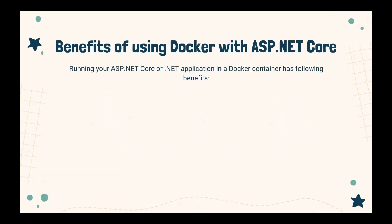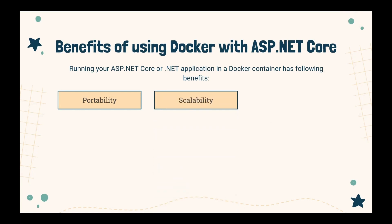Moving towards the benefits of Docker with ASP.NET Core applications. First is portability — Docker allows you to package your ASP.NET Core application and its dependencies into a self-contained isolated container. These containers can run consistently across different environments such as development machines, testing servers and production servers, simplifying deployment and reducing environment-related issues. Second is scalability — Docker makes it easy to scale ASP.NET Core applications using container platforms such as Kubernetes to automatically scale the number of containers based on application demand.